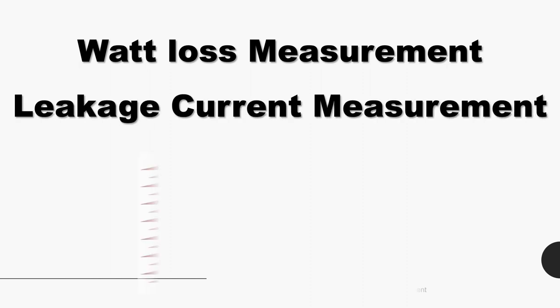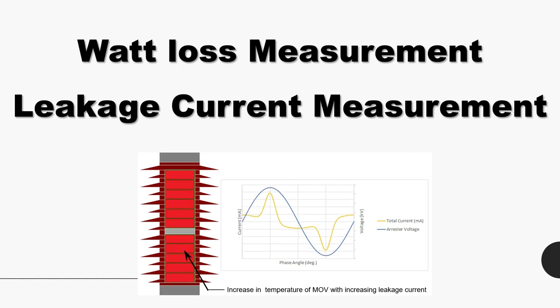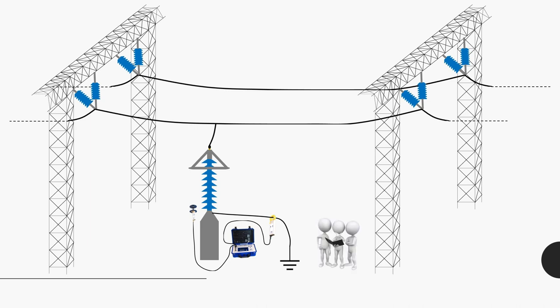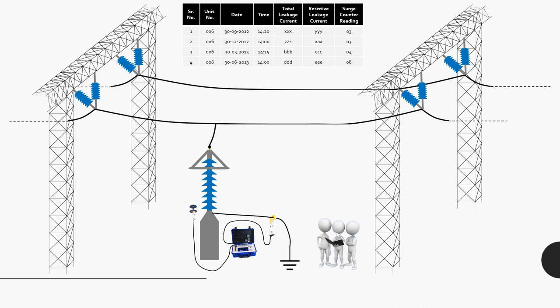Watt loss measurement is the most important test that should be done to verify the health of the arrester. Watt loss measurement or leakage current measurement — either one — can easily detect problems within a lightning arrester. This can be measured by connecting the lightning arrester to the high voltage line and using a leakage current measurement device to find the value, then comparing it against the leakage current value provided by the manufacturer. For routine maintenance, site engineers are advised to keep a log of leakage current measurements and analyze the trend to verify if the health of the lightning arrester has deteriorated. This data can also be used along with data on surge events faced by the arrester.